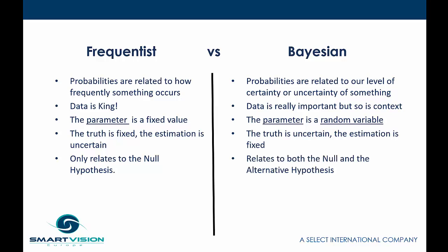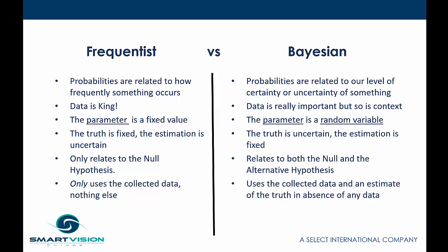In the Bayesian tradition, the approach relates to both the null and the alternative hypothesis, which many find attractive. The frequentist tradition also uses only the collected data — nothing else is used to estimate a probability or parameter value. By contrast, something absolutely fundamental to the Bayesian approach is that it uses the collected data but also incorporates an estimate of the truth in the absence of any data. This is called the prior probability, and it is easily the most contentious aspect of the difference between the two approaches.